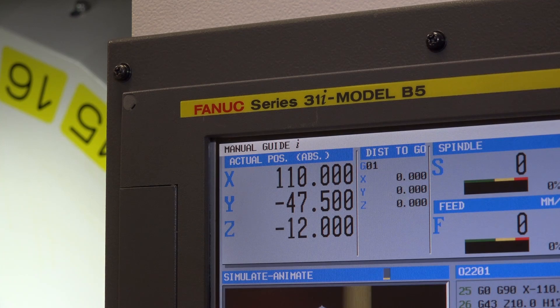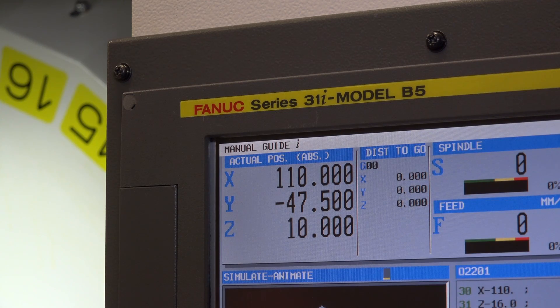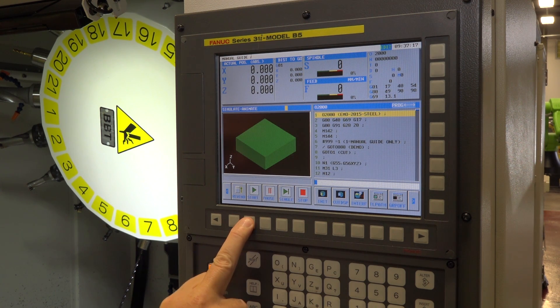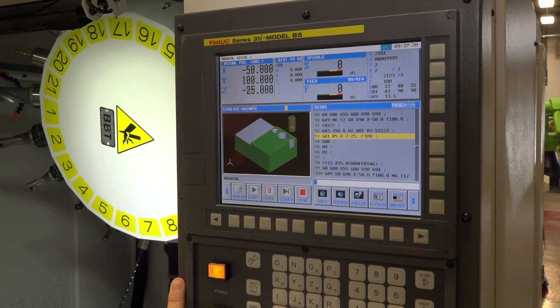The control on this machine is a FANUC 31i. This is a high performance control system which enables this machine to be one of the fastest compact machining centers on the market.